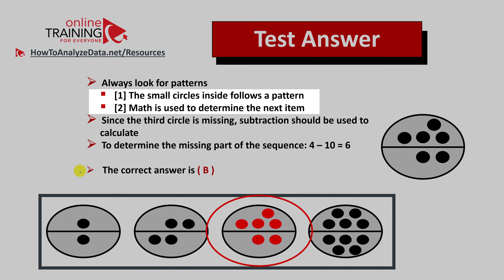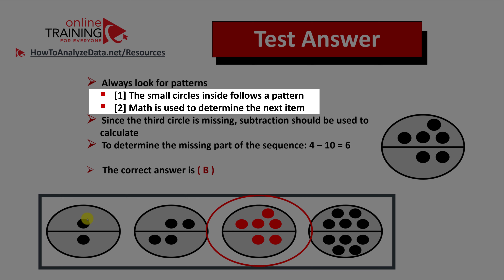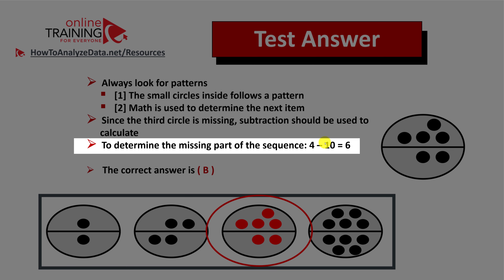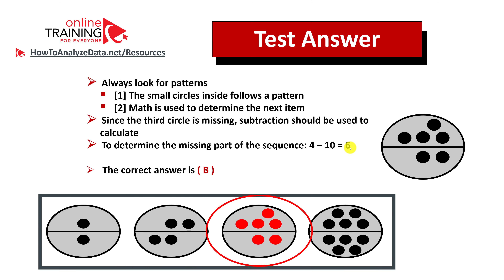When solving any type of question, always look for patterns. There are multiple patterns here. The first is that there's always a small circle inside the larger oval. The second pattern is that math is used to determine the next item. Item number two has 4 small circles and item number four has 10 small circles. Using subtraction — 10 minus 4 — we get 6. So the correct answer is choice B. Check out my ebook in the description for more practice problems.